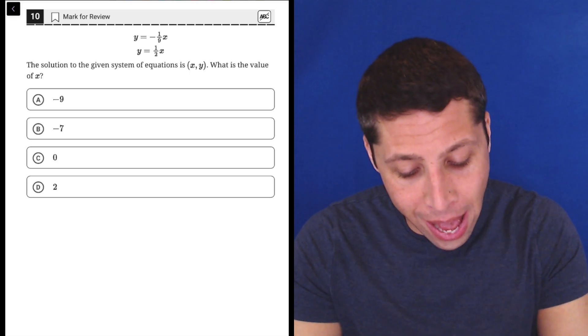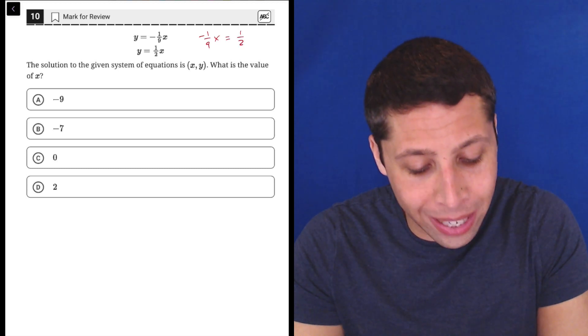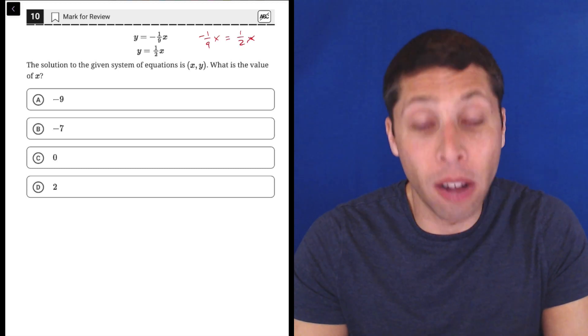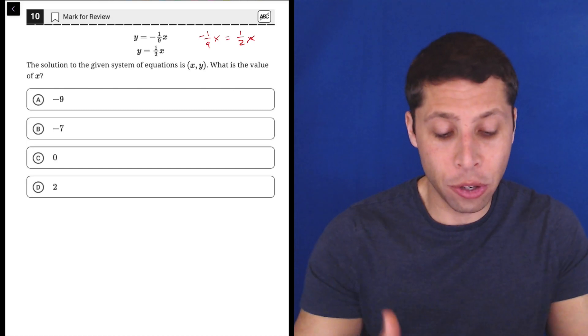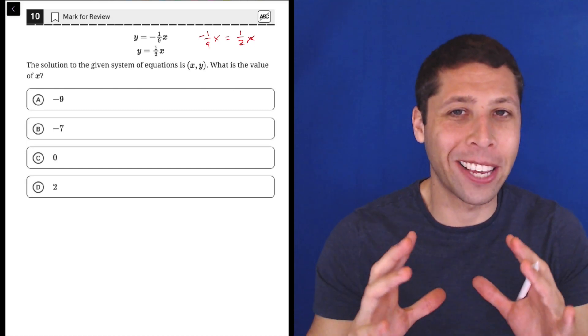So it's not so bad to be like, okay, negative one ninth x is equal to one half x, and then solve for x, that's what they want from us. So we could do that, but we gotta deal with the fractions and the negative, and it just makes me nervous.